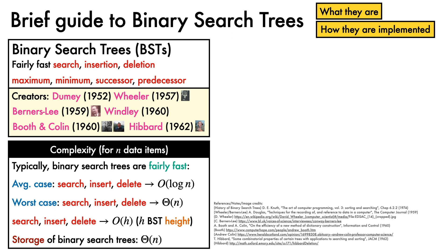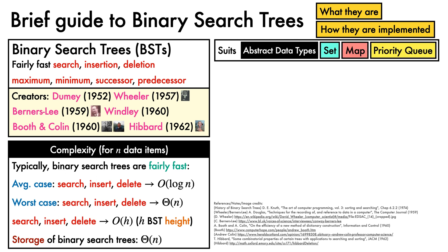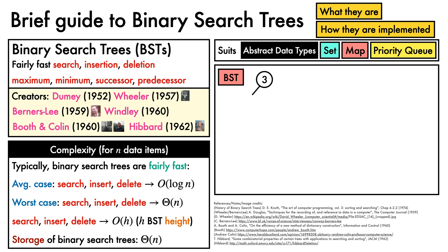Their average case performance and flexibility means that binary search trees can be a good choice for several abstract data types such as set, map, and priority queue. Let's now look at an example of a binary search tree. Here, nodes are drawn as circles with their keys shown as the values inside.